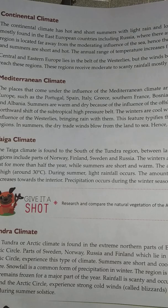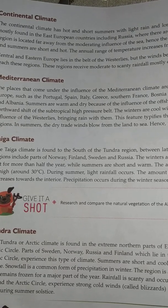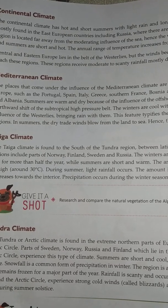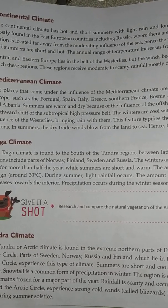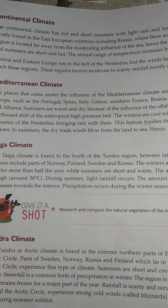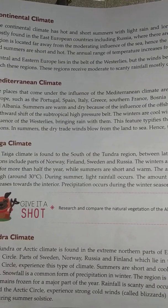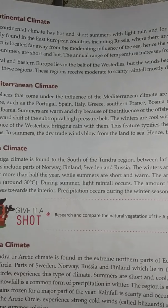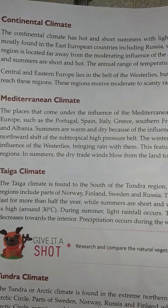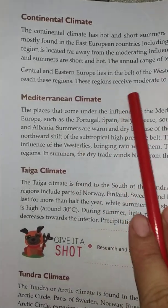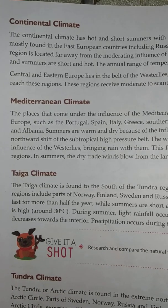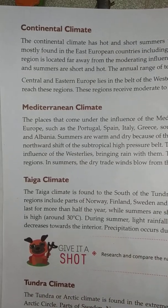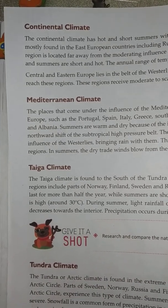Continental climate means extremes of climate because this area is located far away from the seas and major oceans. The winters are very long and cold and the summers are short and hot. Central and eastern Europe lies in the belt of westerlies, but the winds become dry by the time they reach these regions, which receive moderate to scanty rainfall mostly during the summer season.